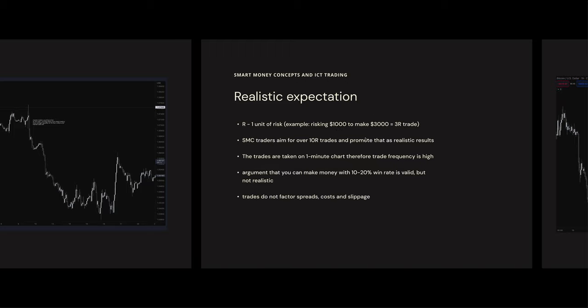So if you are risking $1,000 on a trade and you make $3,000 from it, that is a 3R trade. SMC traders aim for over 10R trades and promote that as realistic results you can achieve on a daily basis. Since these trades are taken on one-minute charts, there is quite a high trade frequency — at least one trade a day. A lot of times you will see people say you don't need a high win rate; I have seen people saying you only need a 10% win rate to make money this way.